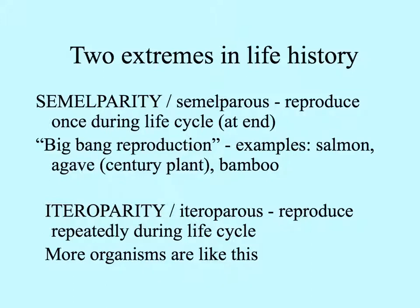Semelparous organisms reproduce only once during their life. They live, mature to some maximum size, and then reproduce, putting a lot of energy into reproduction. Examples of organisms like this are salmon, the century plants or agaves, and bamboo. This kind of reproduction we sometimes call big bang reproduction. The other extreme is iteroparity, which is reproducing repeatedly during the life cycle, and many more organisms are like this, including humans.